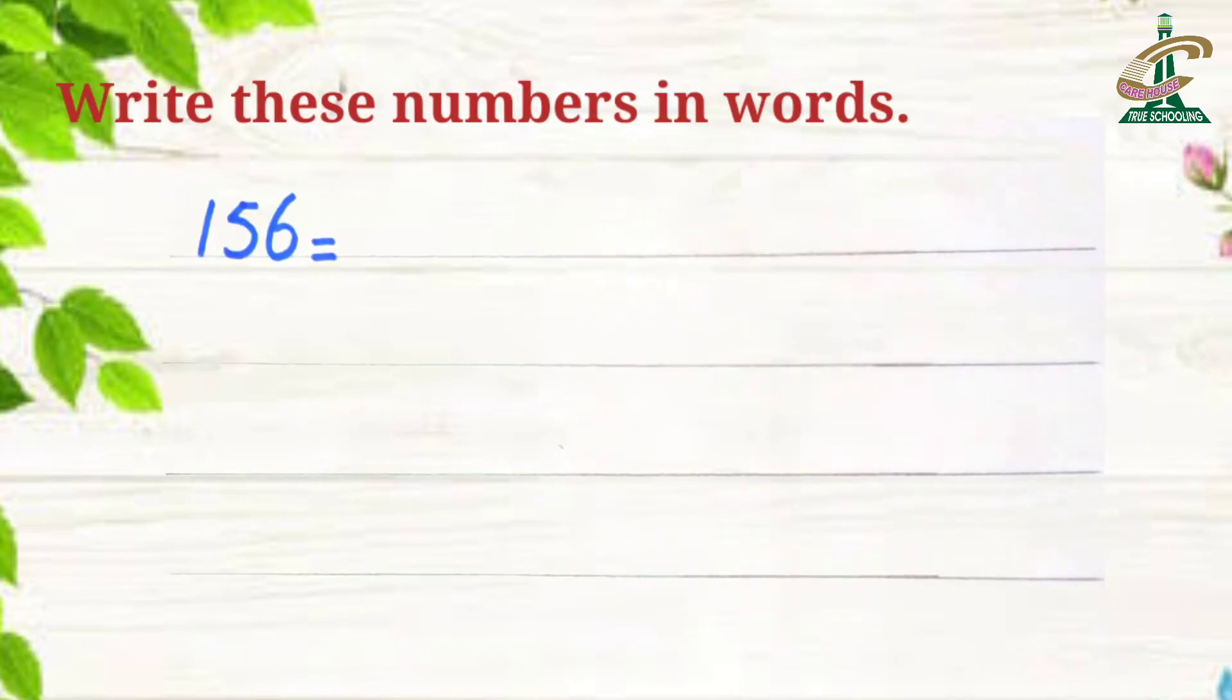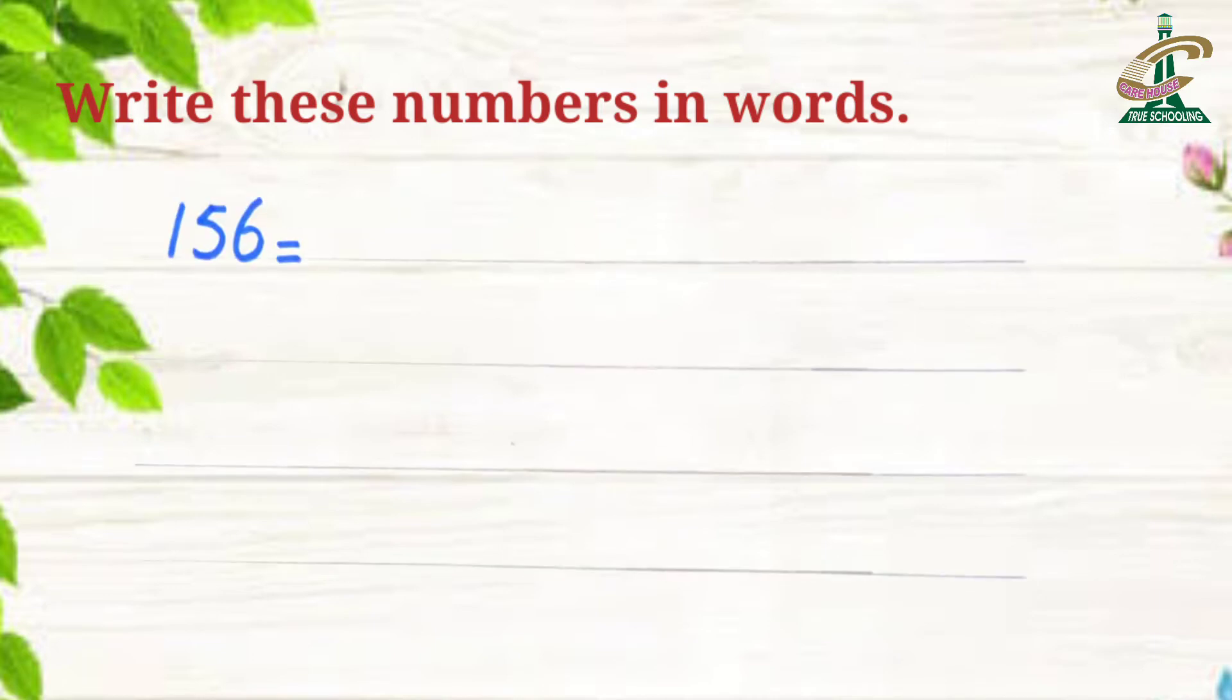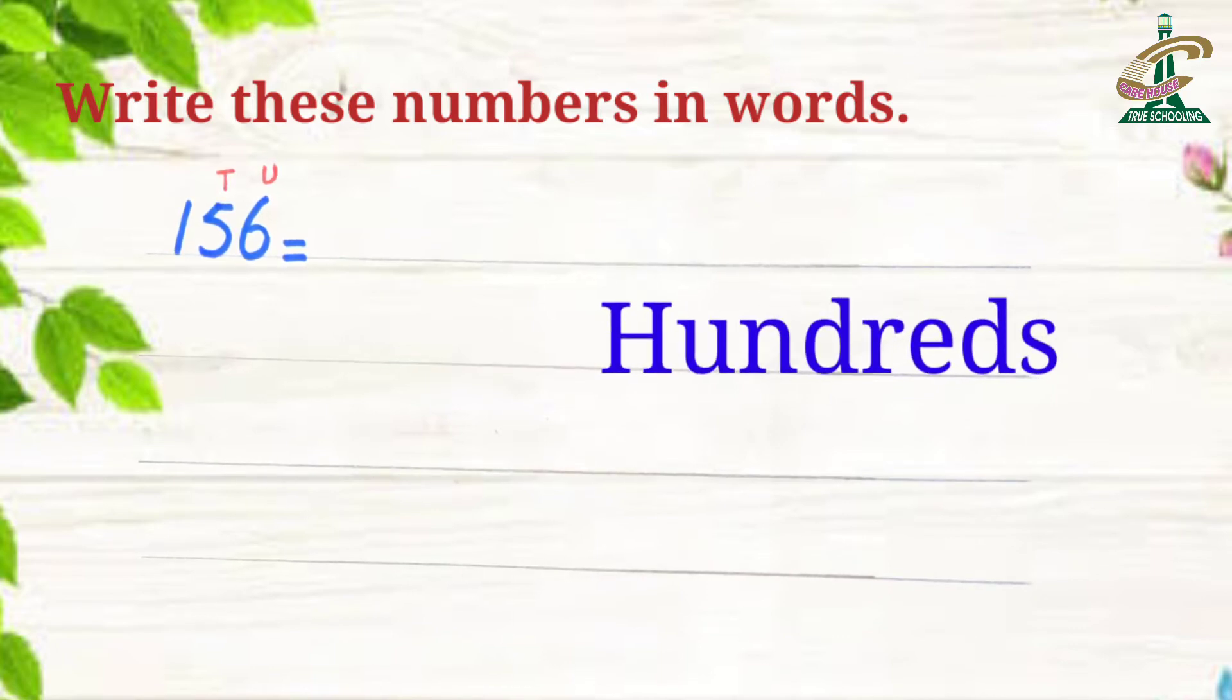This is first number. Dear students, how we can read and write this number? First of all, we will mention the places of digits. Place of 6 is units. Place of 5 is tens. Place of 1 is hundreds.